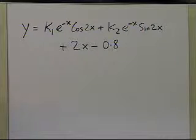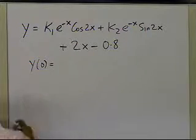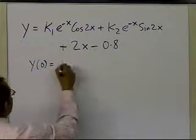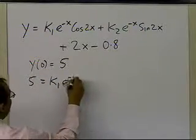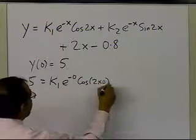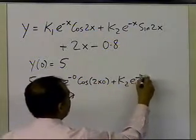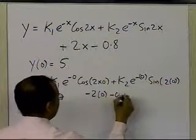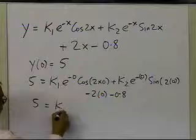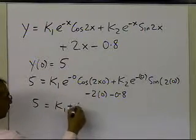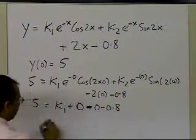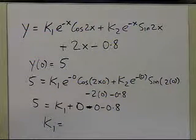The burden of finding k1 and k2 falls on applying the initial conditions. We have y(0) equal to 5, so: 5 equals k1·e^(0)·cos(0) plus k2·e^(0)·sin(0) plus 2(0) minus 0.8. Since sin(0) is 0, the k2 term drops out, giving 5 equals k1 minus 0.8, so k1 equals 5.8.